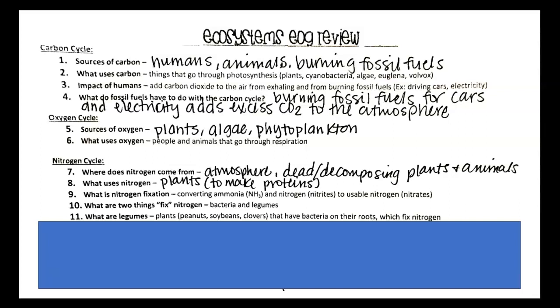And number 11, what are legumes? Plants that have bacteria on their roots that will fix nitrogen. So the plants are going to be like beans and peas, soybeans, peanuts.